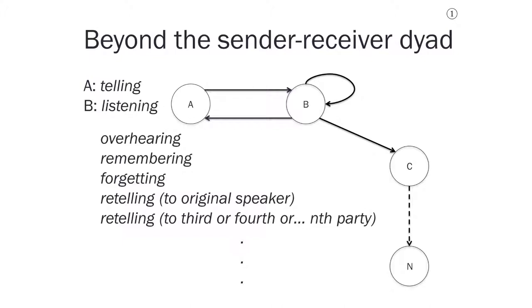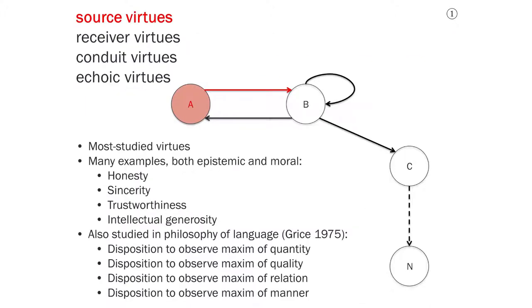This sort of communications network, the one pictured here, is going to be useful for us because it helps us define the four types of virtues that I mentioned in the outline. Source virtues are the dispositions that make someone an excellent source of knowledge for other individuals. So that doesn't mean that they're necessarily good at looking around in the world and seeing what's going on. It means that they're good at communicating what they happen to know, no matter how they came to know it.